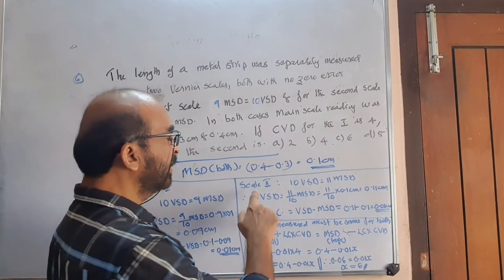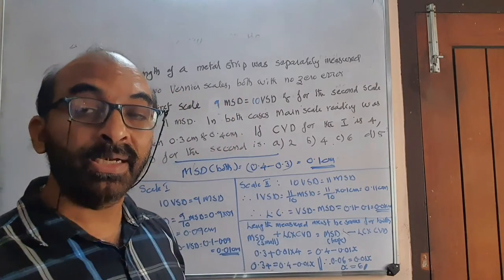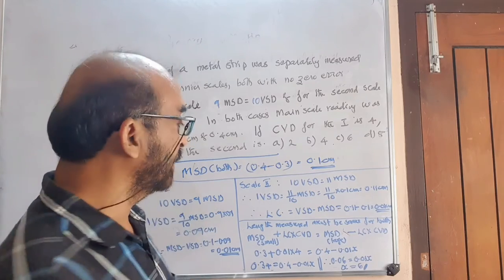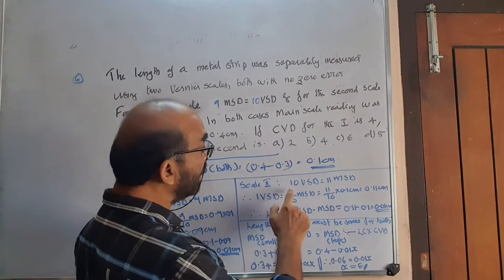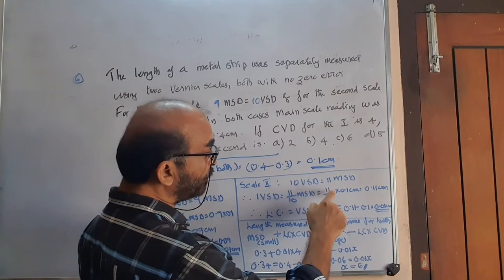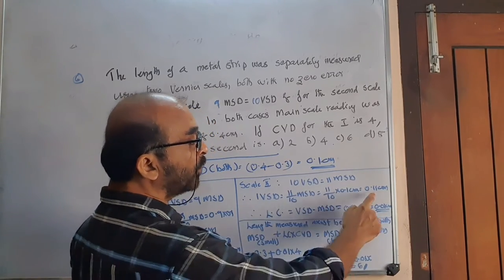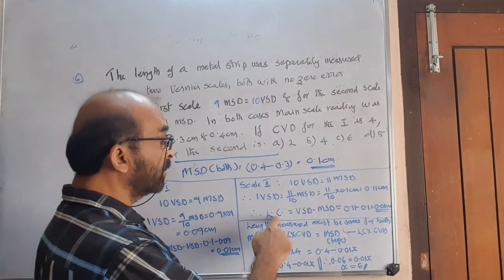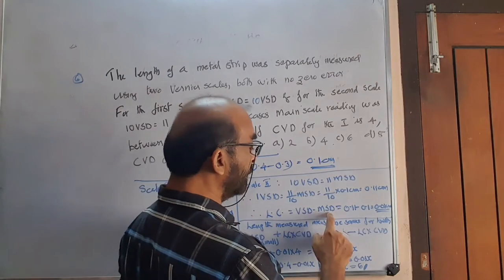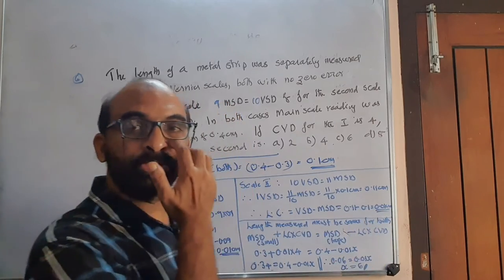For Scale 2: 10 VSD equals 11 MSD means vernier scale division is larger, so it is the retro type. One VSD equals 11 by 10 MSD equals 1.1 into 0.1 equals 0.11 centimeter. Least count equals VSD minus MSD equals 0.11 minus 0.1 equals 0.01 centimeter.